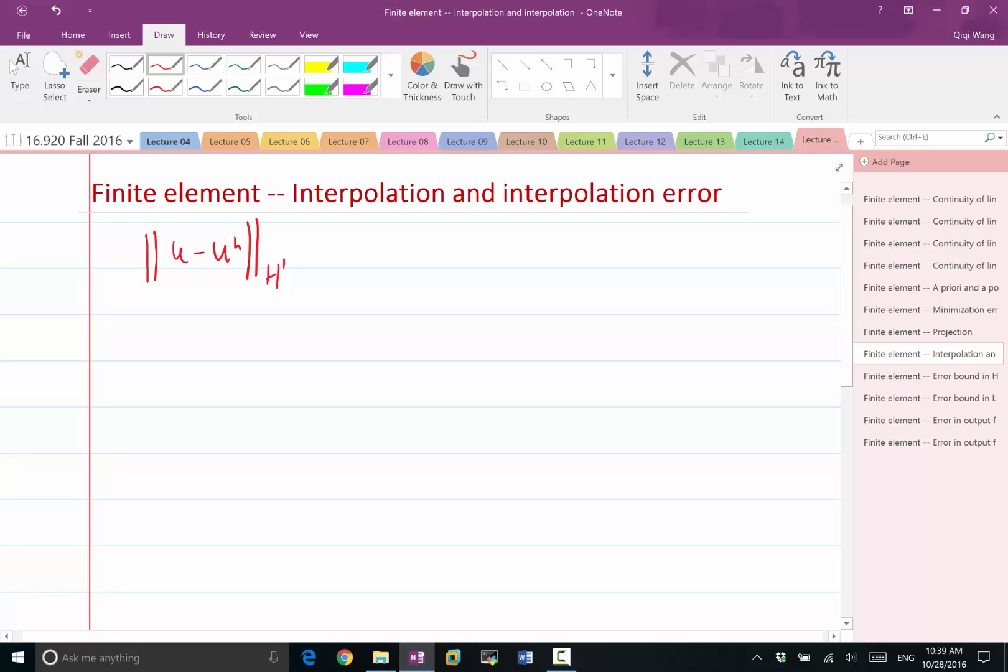In fact, this is not going to be optimal in all possible members of the finite dimensional space. But I can bound this to be some number times U minus WH for all possible WHs in this finite dimensional space.